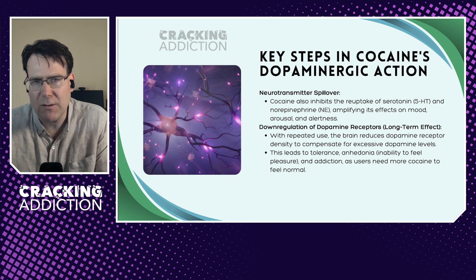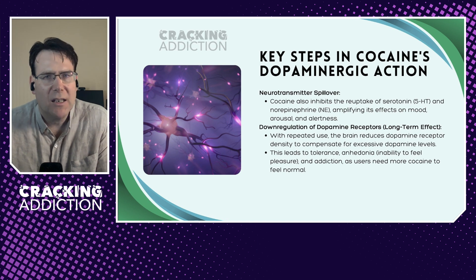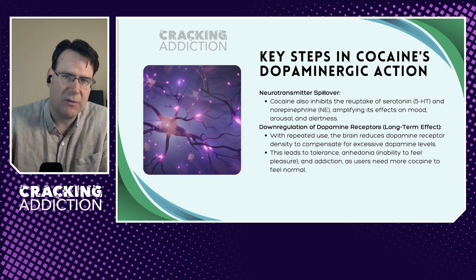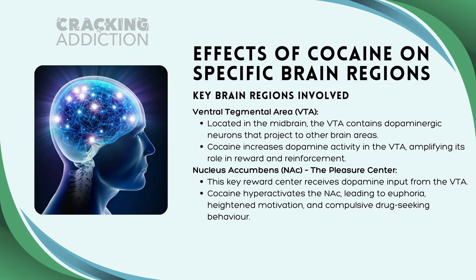People who are addicted to cocaine find the need to use more and more of the substance to get the same effect, or as the addiction progresses, simply to feel normal. That's the general principle of how cocaine works at a synaptic level. Now let's look at the effect of cocaine in specific brain regions. Cocaine affects multiple brain regions, especially those involved in reward, decision-making, stress management, and motor function.